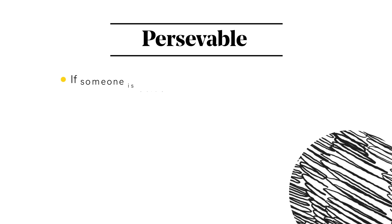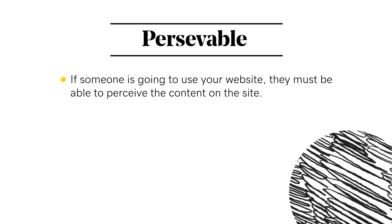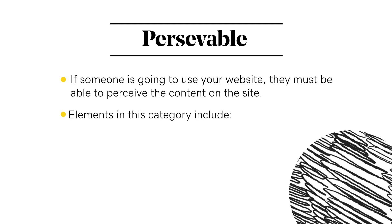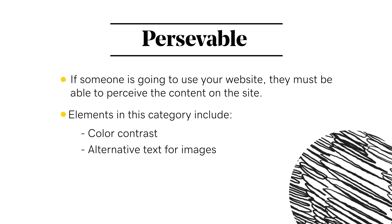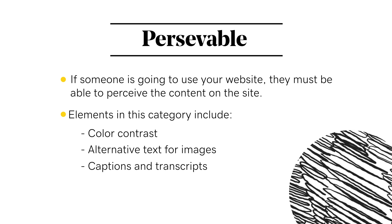Perceivable simply means that if someone is going to be able to use your website, they have to be able to perceive the content that is on the site. Many elements of website accessibility fall into this category, including having appropriate color contrast that ensures the text on your site is readable and stands out from the background behind it, adding alternative text to images so that blind and low vision users receive a description of the image when they encounter it with a screen reader, and having captions on videos and transcripts for videos and audio files so that deaf or hard of hearing people don't miss out.